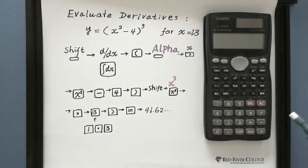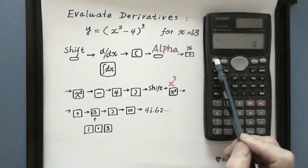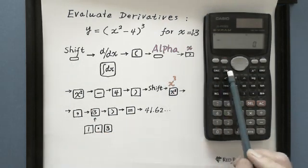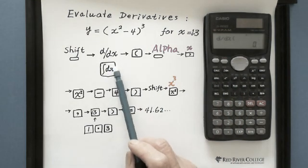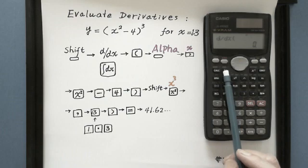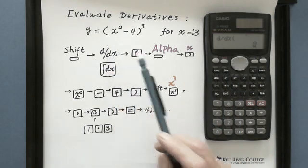So first of all, you hit the shift and derivative, which is this button, and enter this function, put brackets.